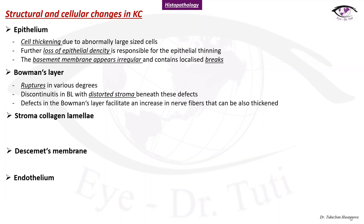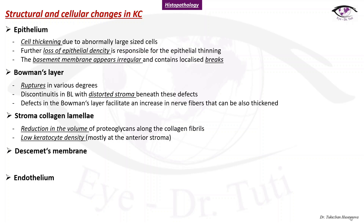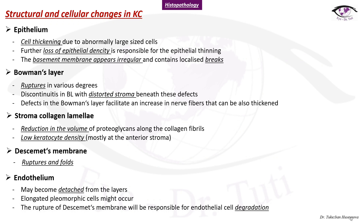In Bowman's layer, ruptures can occur in various degrees. Discontinuities in Bowman's layer can lead to distorted stroma, and defects facilitate an increase in nerve fibers that can also be thickened. The stroma can be reduced in volume and low keratocyte density may be observed. The basement membrane will be characterized with ruptures and folds, and endothelial cells may become detached, with pleomorphic cells elongated and rupture of the basement membrane contributing to endothelial cell degradation.